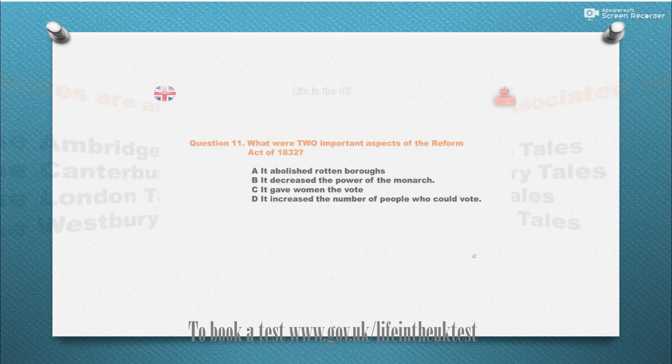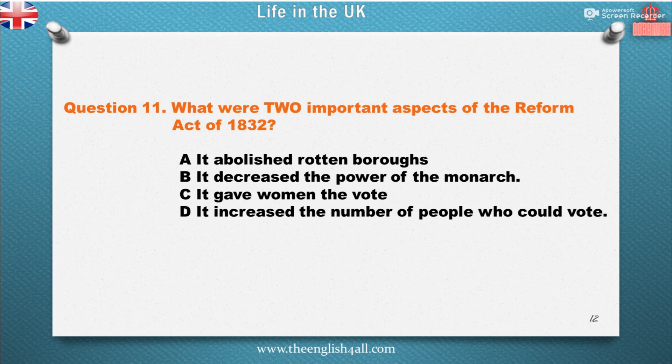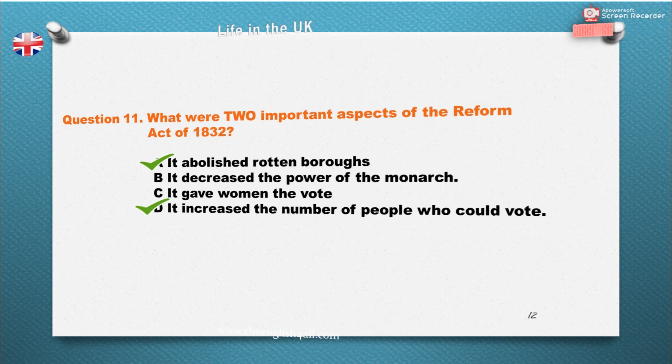Question 11: What were two important aspects of the Reform Act of 1832? A. It abolished rotten boroughs. B. It decreased the power of the monarch. C. It gave women the vote. D. It increased the number of people who could vote. The correct answer is: It abolished rotten boroughs, and it increased the number of people who could vote.